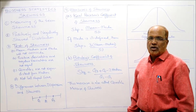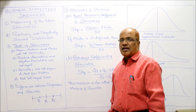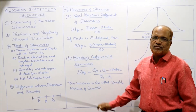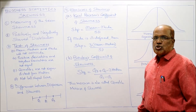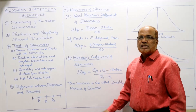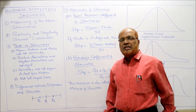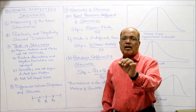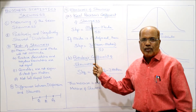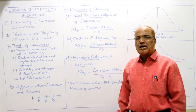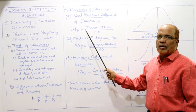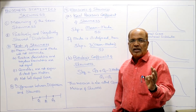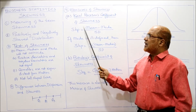The methods of calculating skewness are broadly divided into two categories. The first is Karl Pearson's coefficient of skewness, denoted SKP — the most popular method. If a problem asks to calculate the coefficient of skewness, we always use Karl Pearson's method. The formula is: SKP = (Mean − Mode) / Standard Deviation. You need to calculate the arithmetic mean, then the mode, then the standard deviation.